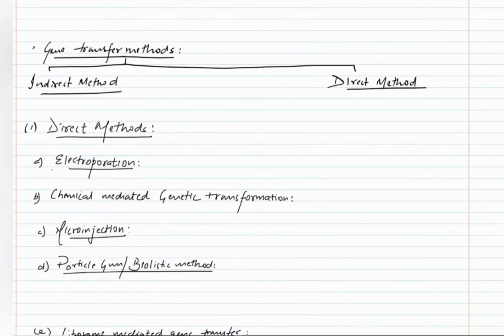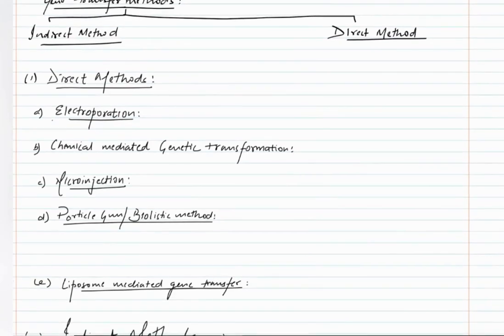Gene transfer methods are of two types: indirect methods and direct methods. In direct methods, foreign genes are transferred directly without the aid of any vector. The direct methods include electroporation — electroporation means we pass electricity through the cell to create transient pores.